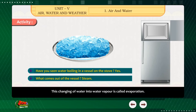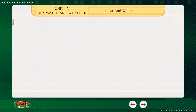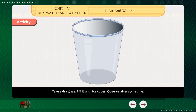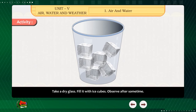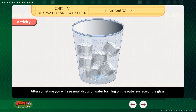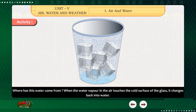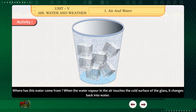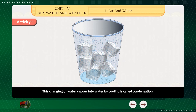Ice is lighter than water and floats on water. The change of water into water vapour is called evaporation. Activity — Take a dry glass and fill it with ice cubes. After some time, you will see small drops of water forming on the outer surface of the glass. Where has this water come from? When the water vapour in the air touches the cold surface of the glass, it changes back into water. This changing of water vapour into water by cooling is called condensation.